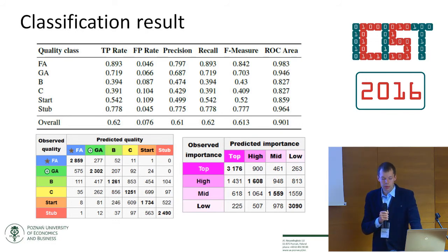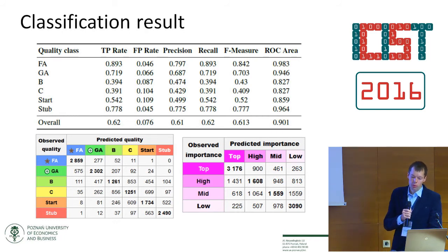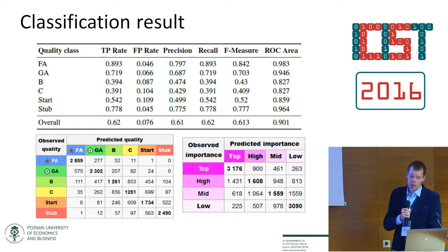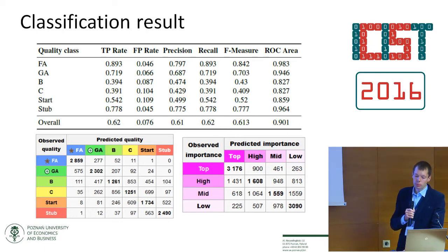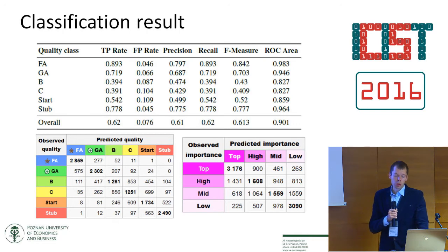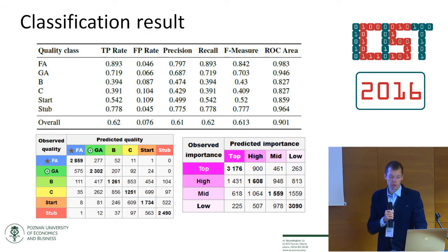Our research showed the efficiency of the random forest classifier on similar tasks. Therefore, in this study we also used this data mining algorithm with default settings. Using more than 18 different article parameters as independent variables and quality class as the dependent variable, we reached 16% precision of classification. After including the additional feature of article importance, the precision of the model increased to 61%. Therefore, we conclude that inclusion of additional input variables such as article importance can significantly improve the precision of classification.